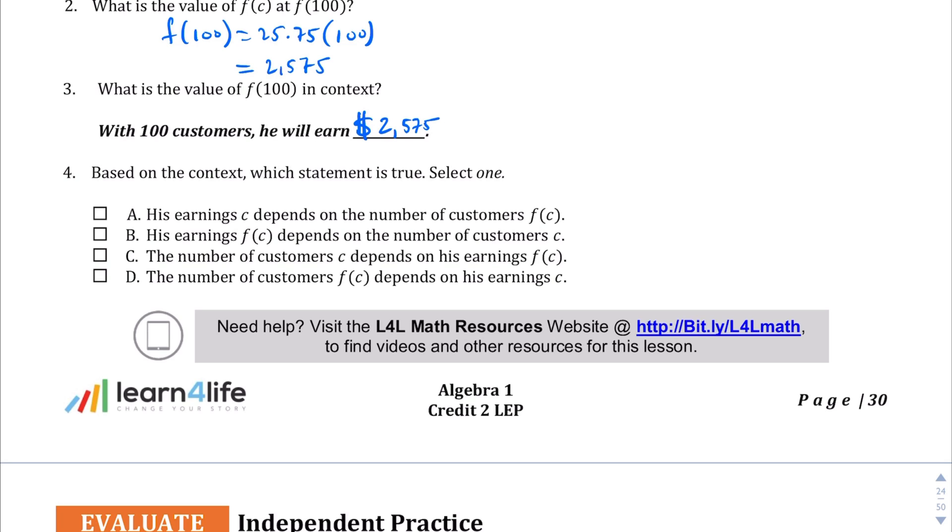B: "his earnings f(c)" - that's better - "depends on the number of customers c." Yeah, that's definitely true. The next two are probably not true because we were only asked to select one, but let's check anyway. C: "the number of customers c depends on his earnings f(c)." The number of customers is not dependent on earnings; the number of customers is actually the independent variable, so it's not C. And lastly D: "the number of customers f(c)" - f(c) is not the number of customers. So that is not the right choice. So B is your only choice there.